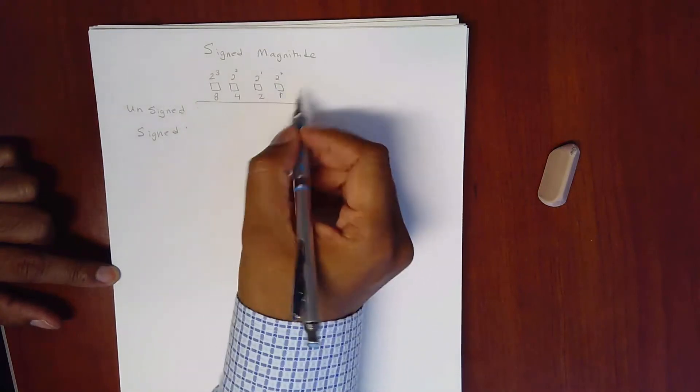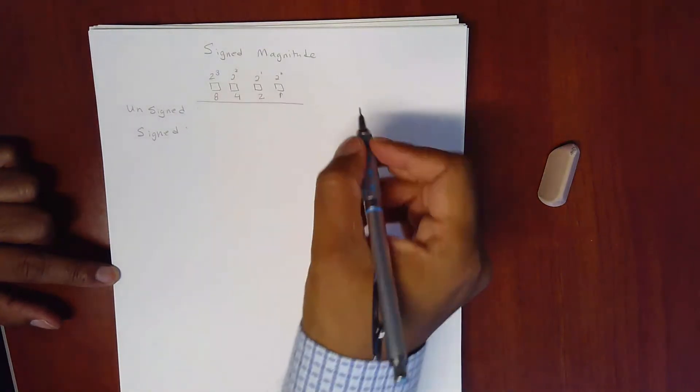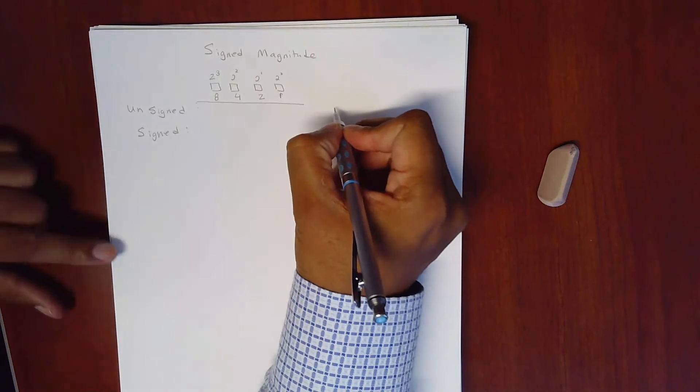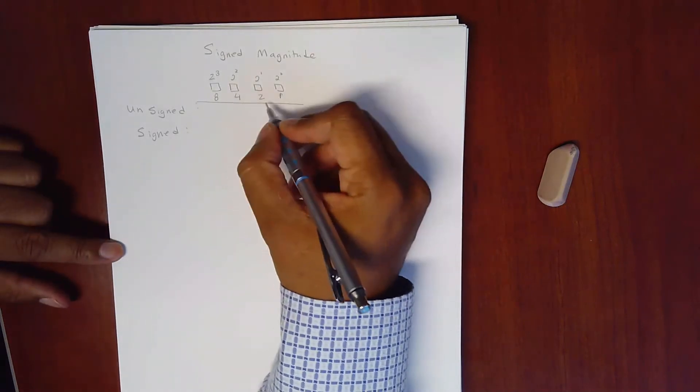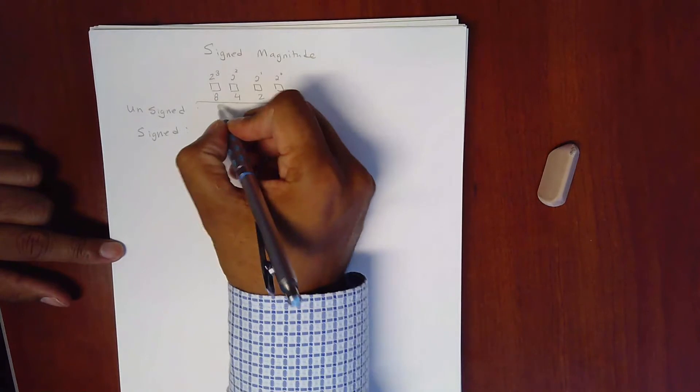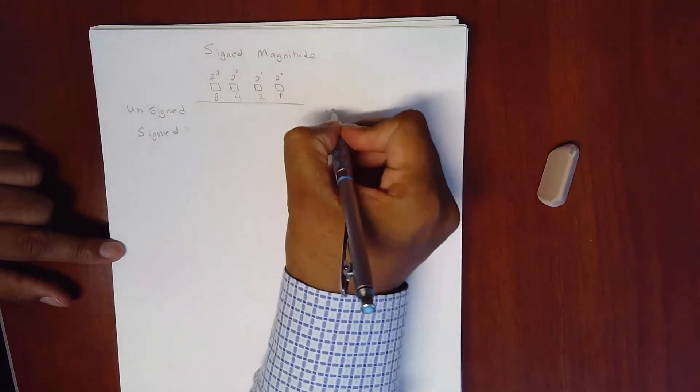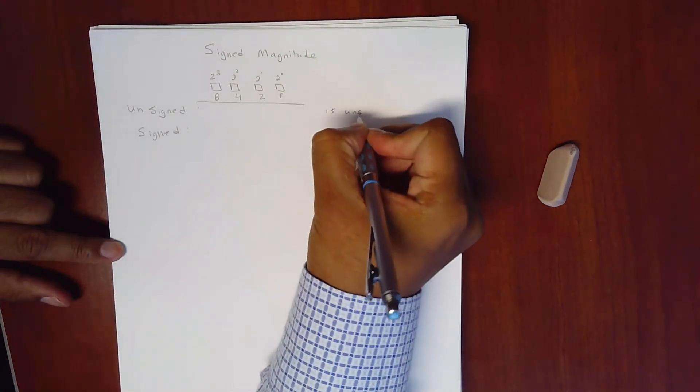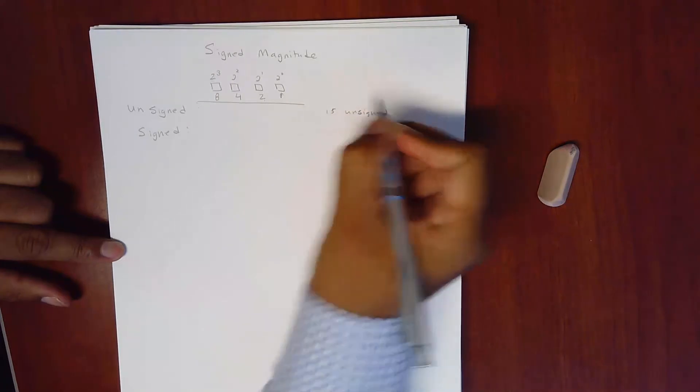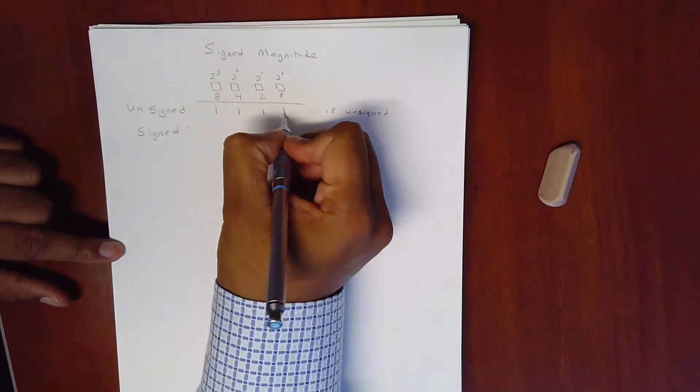So if the number is unsigned, if I take the number 15, this is 1, 1, 1, 1. So 8 plus 4 plus 2 plus 1. 15 unsigned means 1, 1, 1, 1.